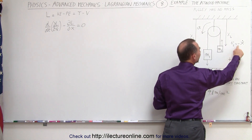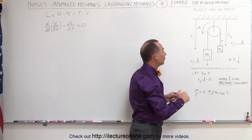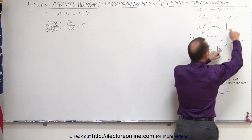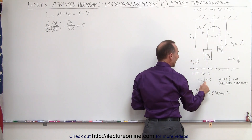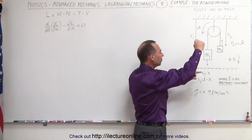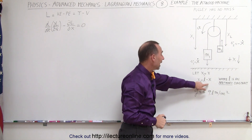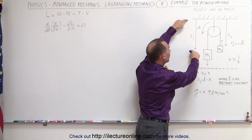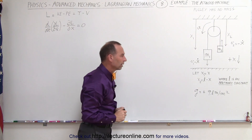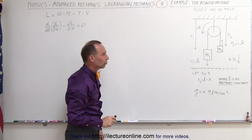The velocity for v2 will be negative x-dot because it will be in an upward direction. If the distance from the ceiling to m1 is positive x, then the distance from the ceiling to m2 can be considered l minus x, where l is any arbitrary constant. We subtract x from it to get the distance x2. Remember that g is a positive 9.8 meters per second squared.